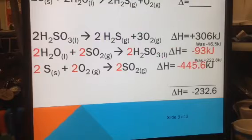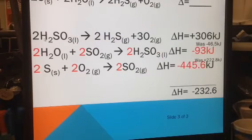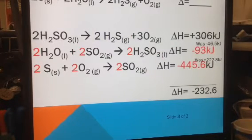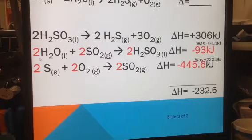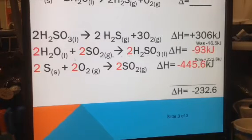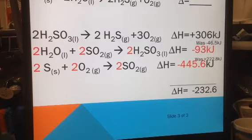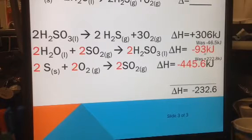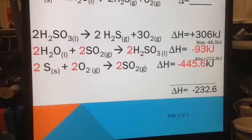The next thing we do is we do what I said on the last slide. This one is left the same, and the number is left the same. This one is times by 2, so the number, which was negative 46.5, is now negative 93.